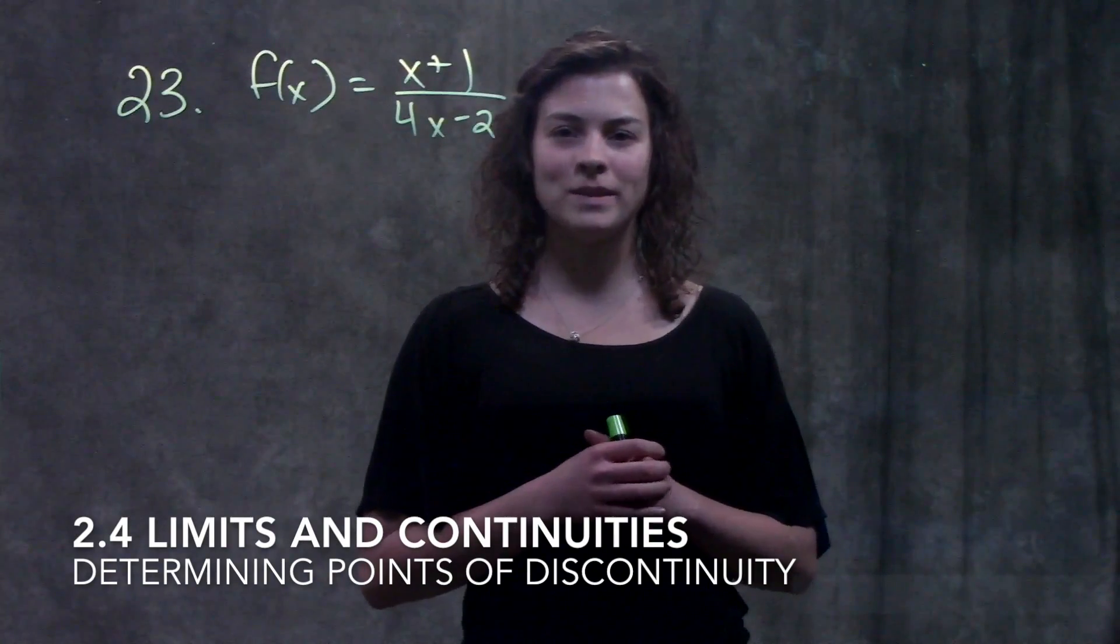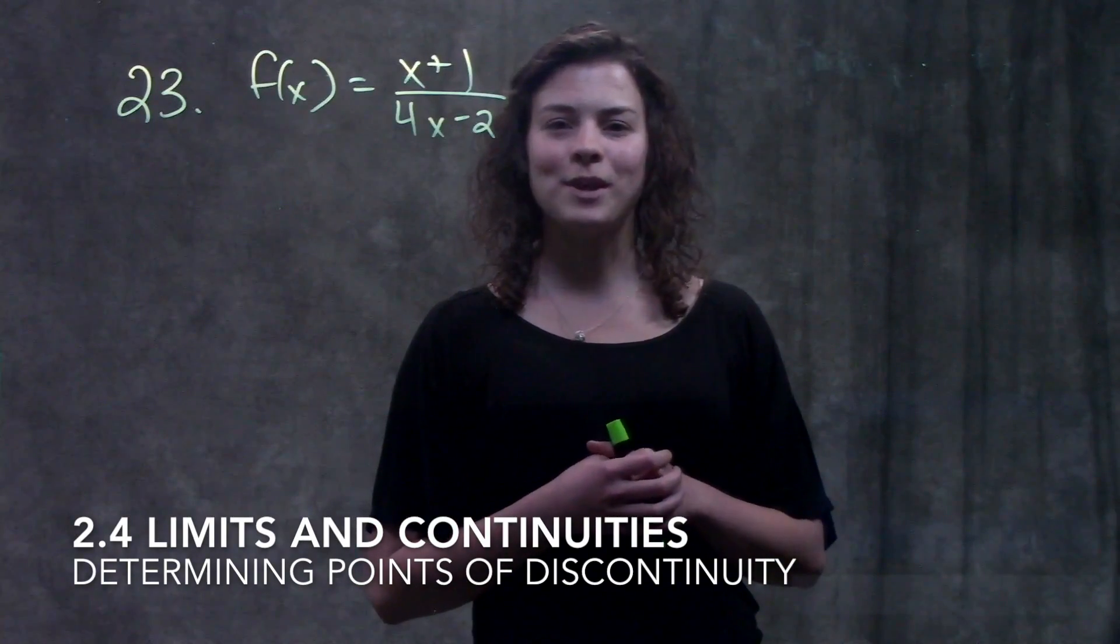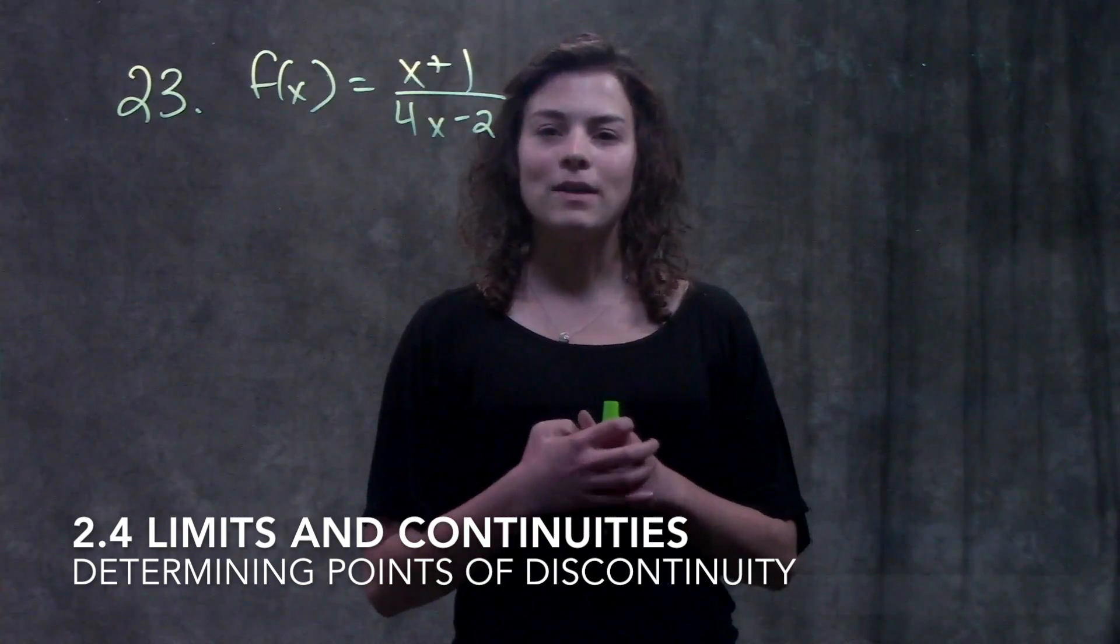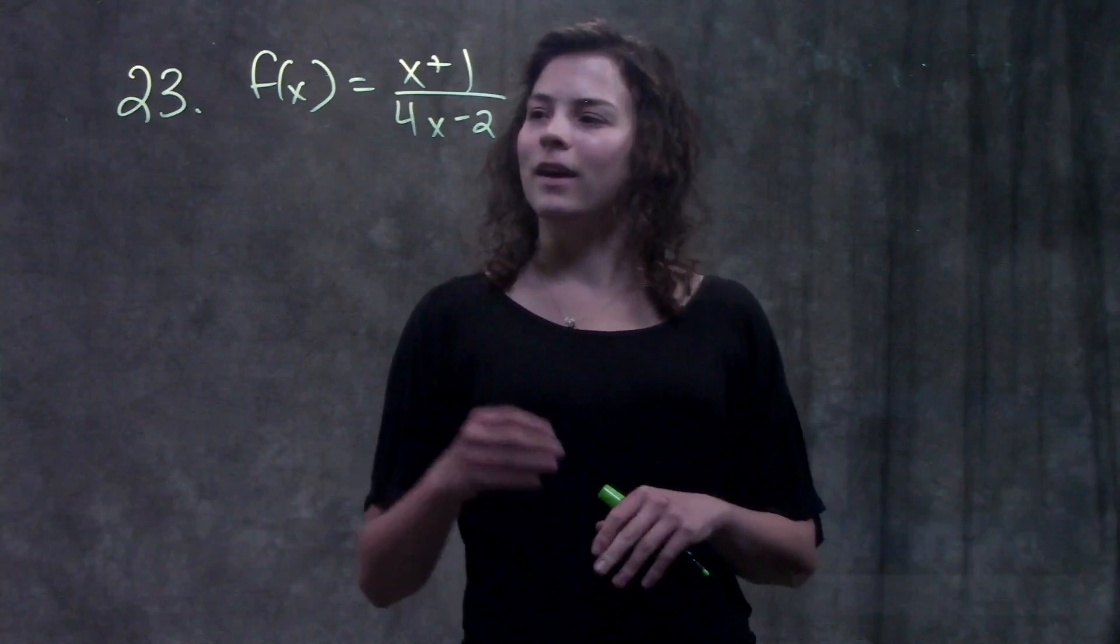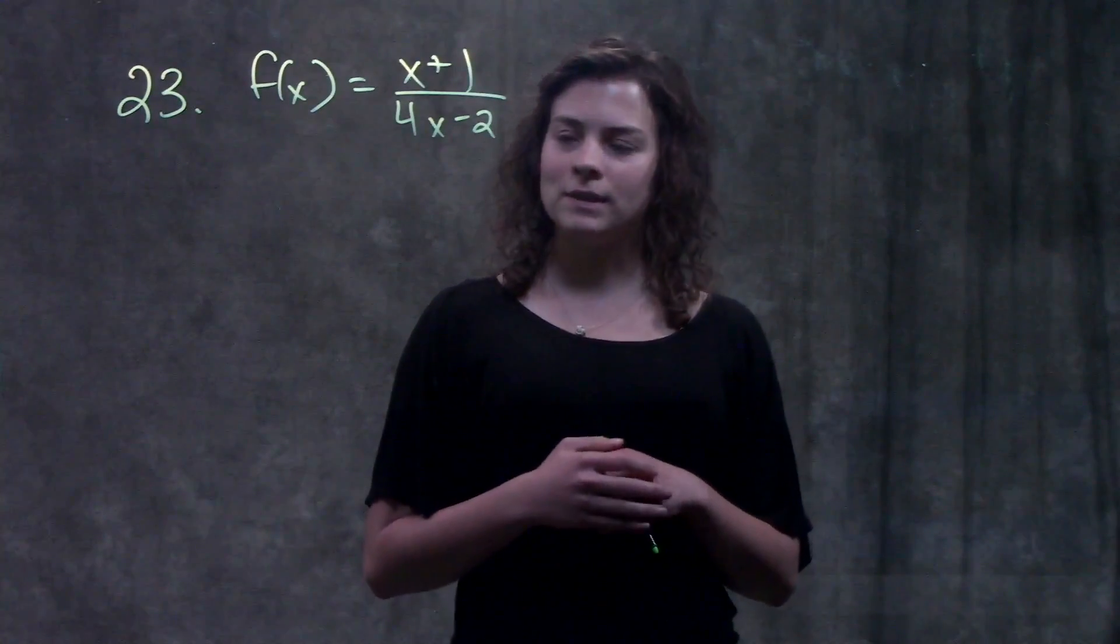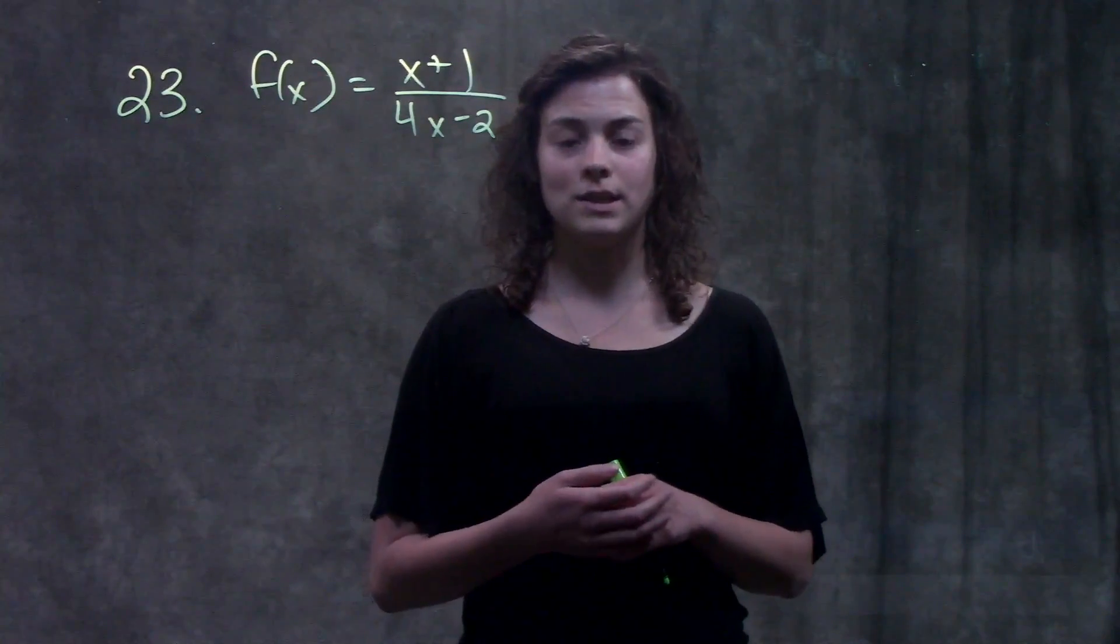This is section 2.4, Limits and Continuity. In this video, we're going to go through an example of how to solve for when they're asking us where a function is discontinuous. So this is number 23 in your book. It gives us this function, and it's asking us to find the points of discontinuity.